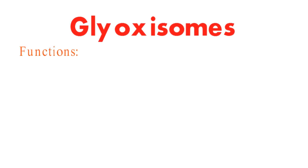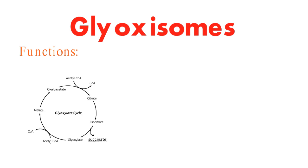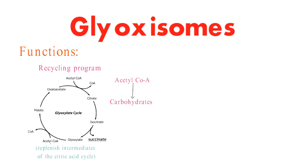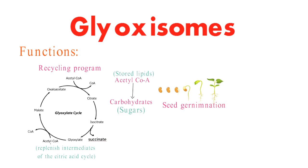Let's dive into the functions of glyoxosomes. The star of the show is the glyoxalate cycle. This metabolic pathway is like a recycling program for cells — it's an anaplerotic pathway, replenishing intermediates of the citric acid cycle. During the glyoxalate cycle, glyoxosomes convert acetyl-CoA from fatty acids into carbohydrates. This process is especially critical during seed germination, where stored lipids are transformed into sugars to fuel the early growth of seedlings.